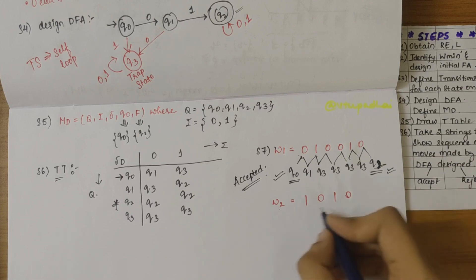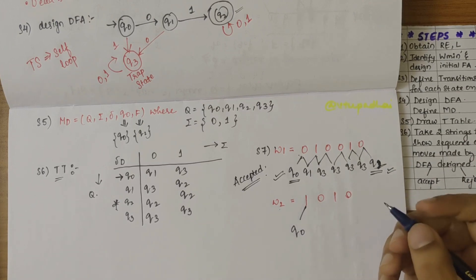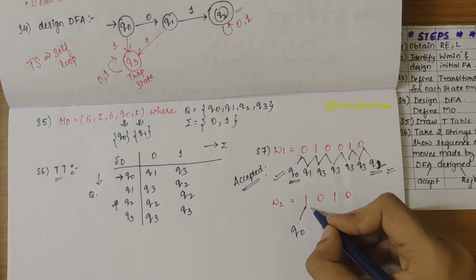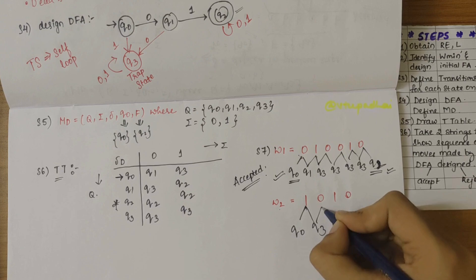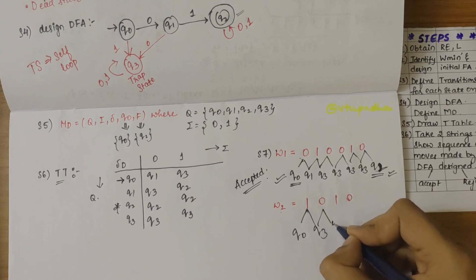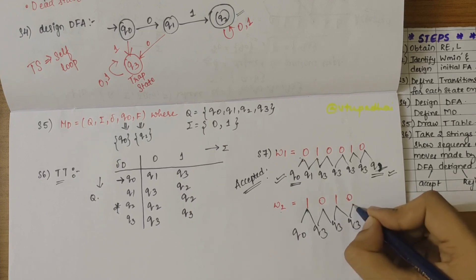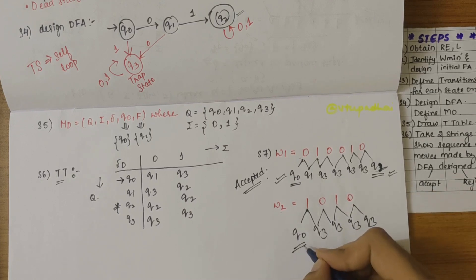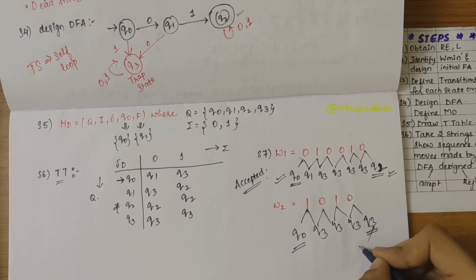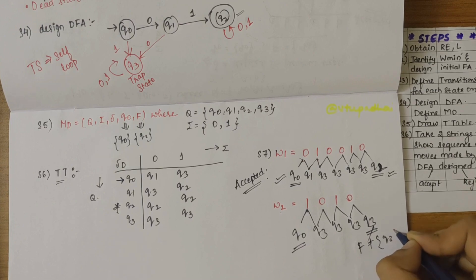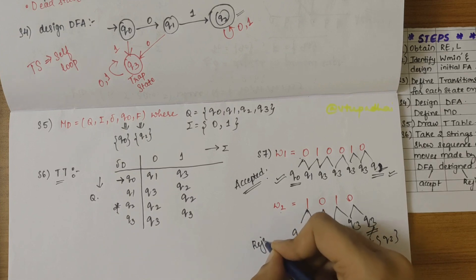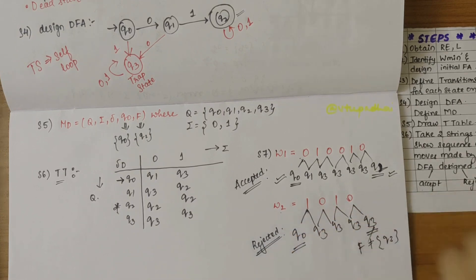For the rejection example, take w2 = 1 0 1 0. Starting from q0: q0 on 1 → q3, q3 on 0 → q3, q3 on 1 → q3, q3 on 0 → q3. Though the initial state is correct, the final state is q3, and F is not q3 — so this string is rejected. I hope you understood how to design a DFA when such conditions are specified.